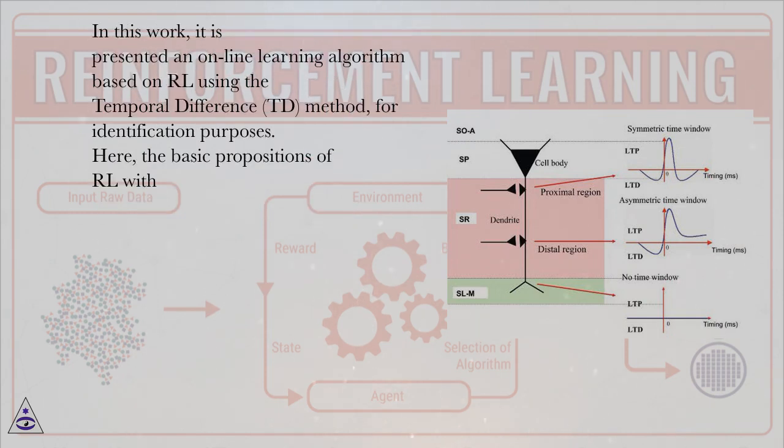In this work, it is presented an online learning algorithm based on RL using the temporal difference, TD, method for identification purposes.